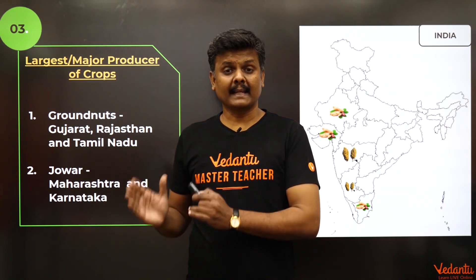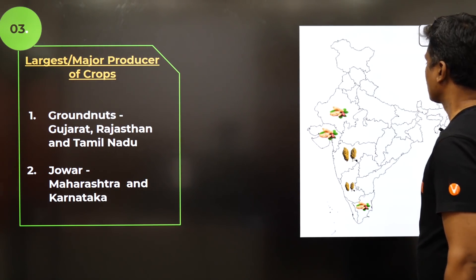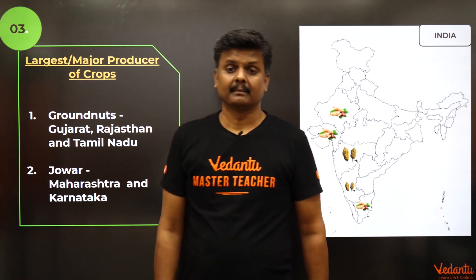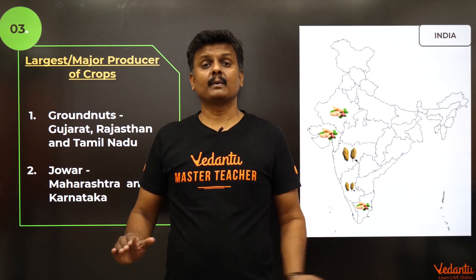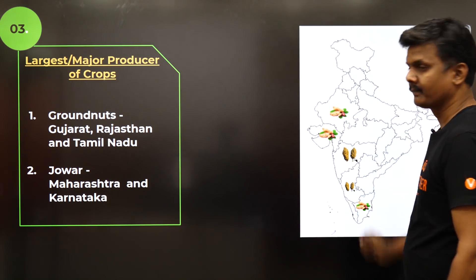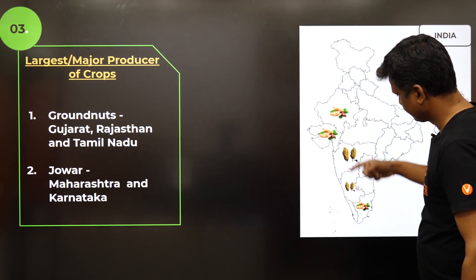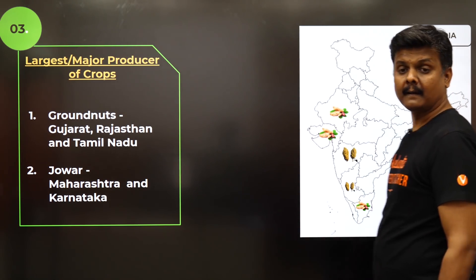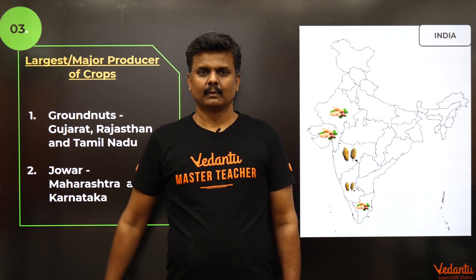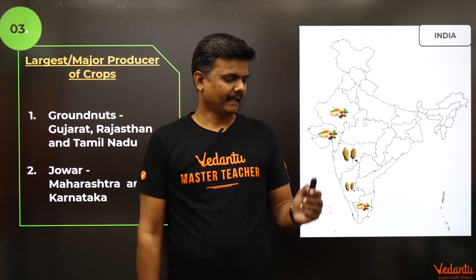For groundnuts, the major cultivation areas are Gujarat, Rajasthan, and Tamil Nadu — as I mentioned earlier. Jowar is grown in Maharashtra and Karnataka. Please have a quick look at the map to see where groundnuts and jowar are found.